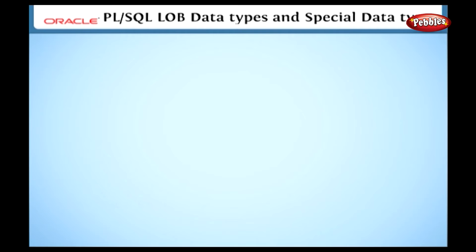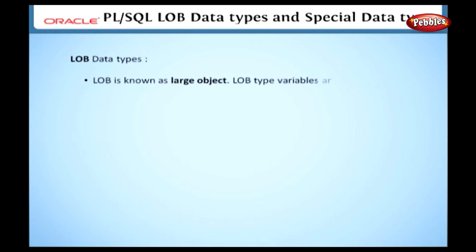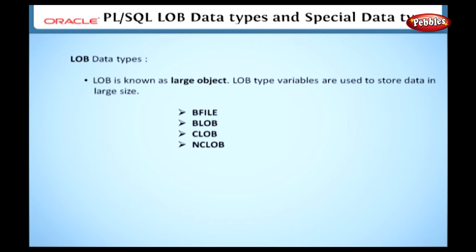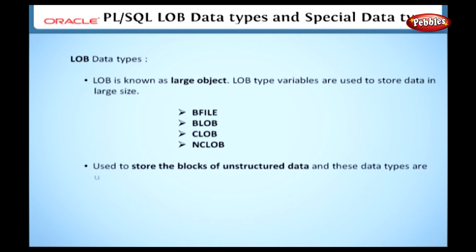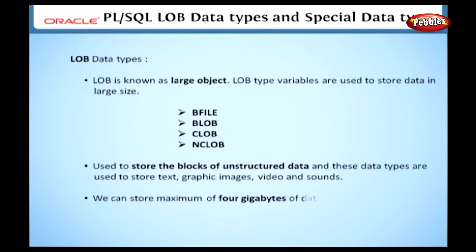Now we are going to learn about some of the special data types in Oracle 10G. First, we will see LOB data types in detail. LOB is known as large object. LOB type variables are used to store data in large size. There are many data types like BFILE, BLOB, CLOB, and NCLOB in the LOB type. These types are used to store blocks of unstructured data such as text, graphic images, video, and sounds. We can store a maximum of 4 gigabytes of data in these variable data types. In Oracle 10G, we can also convert CLOBs to CHAR and VARCHAR2 types and vice versa, or BLOBs to RAW and vice versa, which helps us to use LOB types in most SQL and PL/SQL statements and functions.